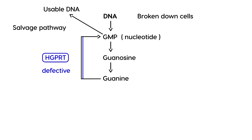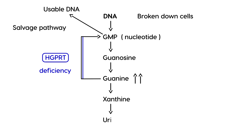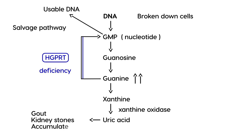If you don't have HGPRT — if it's deficient — guanine is not able to be recycled back into GMP. So guanine levels become excessive, and guanine is broken down into xanthine. Then xanthine is broken down into uric acid with the help of an enzyme called xanthine oxidase. This uric acid is what causes a lot of the problems in Lesch-Nyhan syndrome: it causes gout, it can cause kidney stones, and it can also accumulate in the brain.